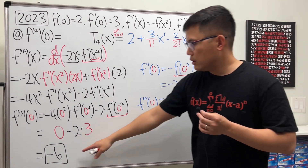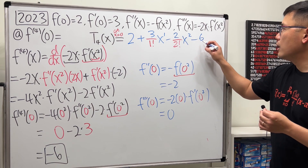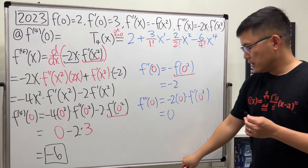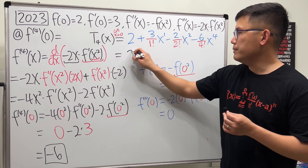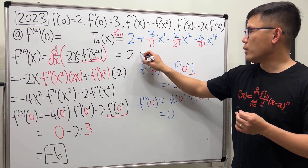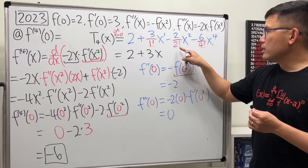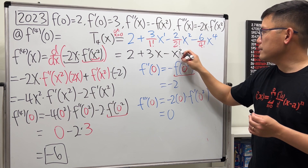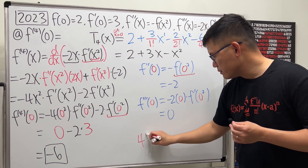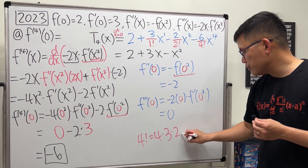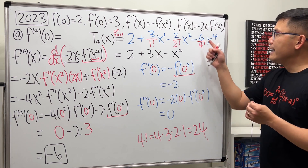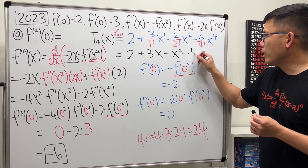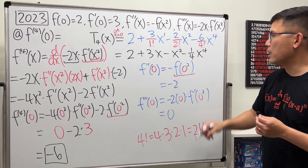Lastly, the fourth derivative term is negative 6 over 4 factorial times x to the fourth power. Now we simplify. 2 stays as 2. 3 divided by 1 factorial is just 3x. Negative 2 divided by 2 factorial — which is 2 — is just negative x squared. For the fourth term: 4 factorial is 4 times 3 times 2 times 1, which is 24. So negative 6 divided by 24 is negative one-fourth x to the fourth power. That's our final polynomial.